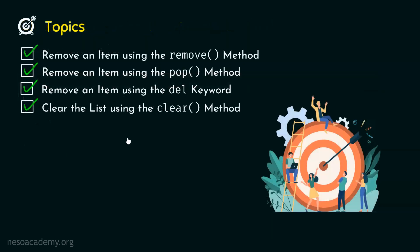We are done with all the topics of this presentation. We have learned how to remove an item using the remove method and the pop method. The key difference is that the pop method not only deletes an item but also returns it, whereas the remove method just removes it. We have also learned to remove an item using the del keyword, which can delete the entire list, and how to empty the list using the clear method. Thank you for watching — I will see you in the next one.